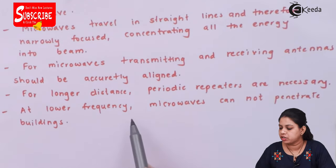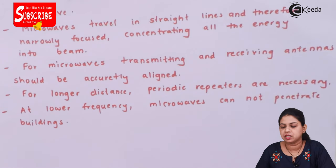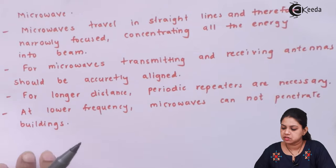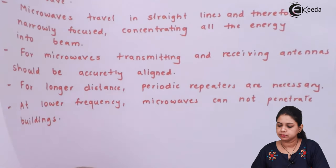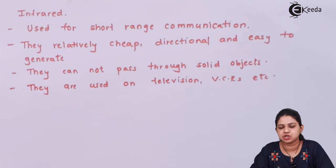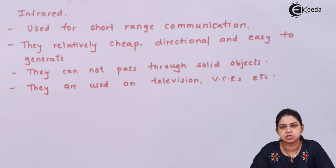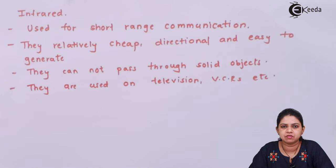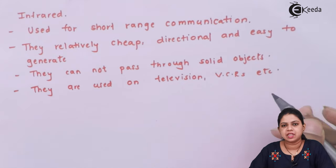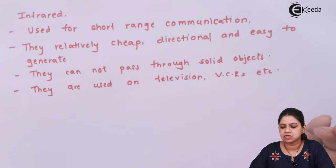At lower frequencies, microwaves cannot penetrate a building. Next is infrared. Infrared is used for short-range communication — for example, TV remotes, VCRs, and televisions. Infrared devices are relatively cheap and cannot penetrate through buildings.